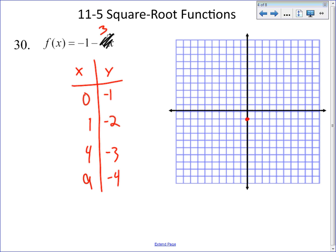So now we graph this: (0, negative 1), (1, negative 2), (4, negative 3), and (9, negative 4). And as you can see, this one actually opens up as a complete reflection of what we're used to. Normally we're used to ones that open up like that. This has been reflected over the x-axis. The reason for that is this negative out in front of the radical sign.